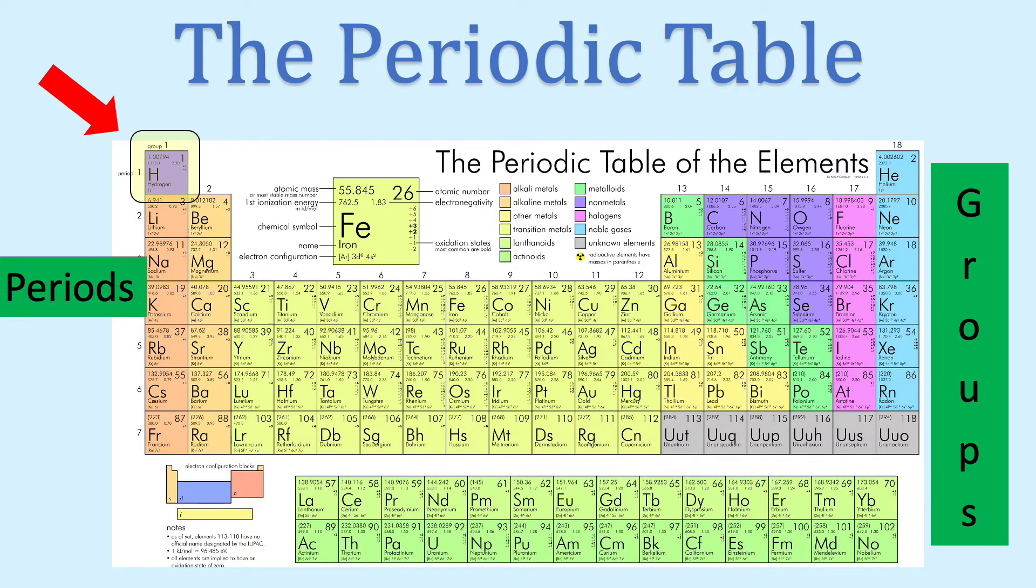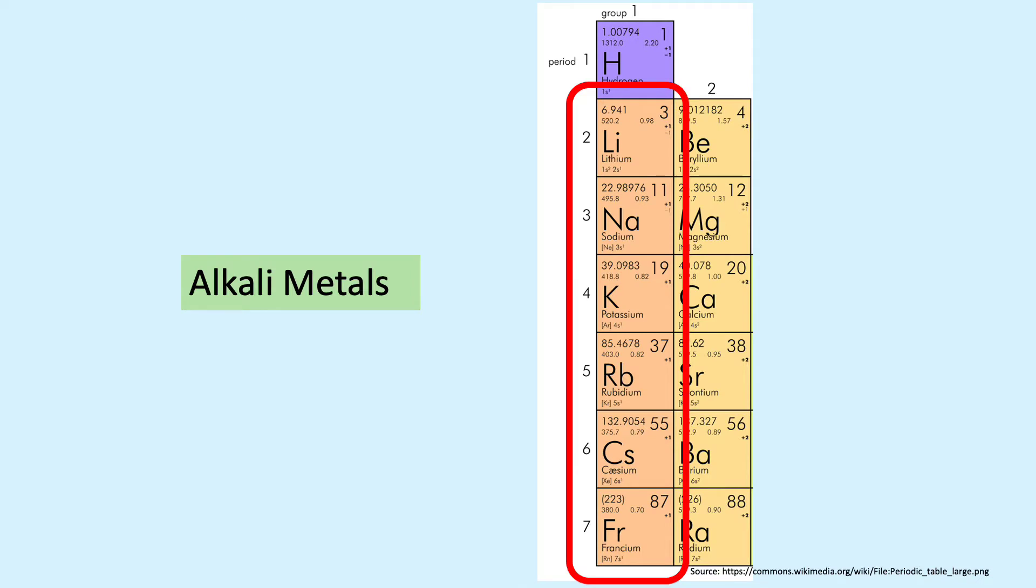Vertical columns of elements are called groups or families. Some families actually have names.